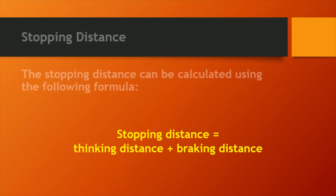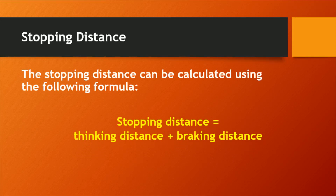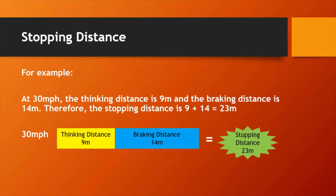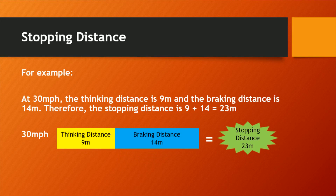The stopping distance can be calculated using the formula: stopping distance equals thinking distance plus braking distance. For example, at 30 miles per hour, the thinking distance is 9 meters and the braking distance is 14 meters. Therefore, the stopping distance is 9 plus 14 — 23 meters.